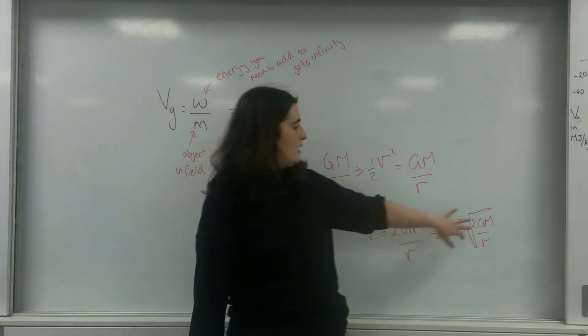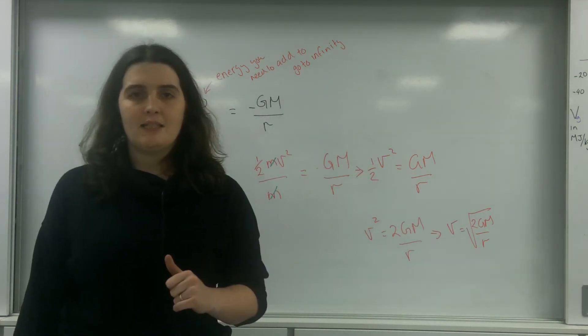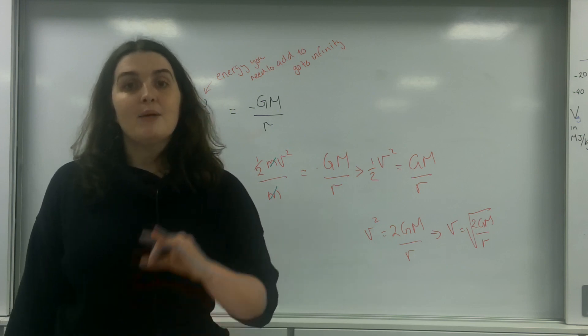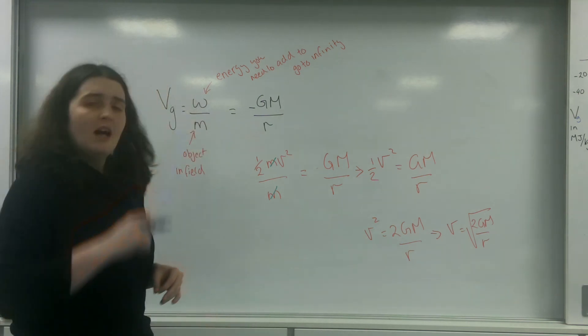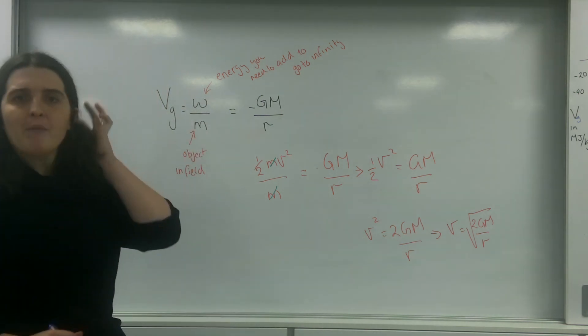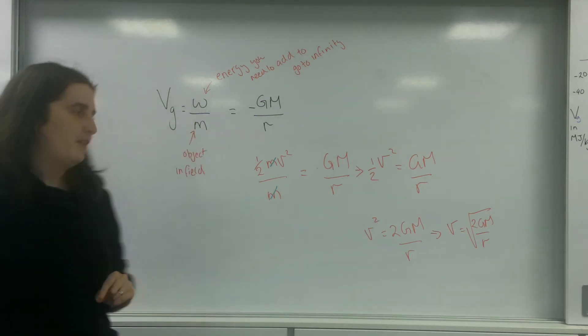So this v equals square root of 2GM over r, this v is the escape velocity, because it's the velocity that would give me enough kinetic energy to leave the field. And we're going to have a go at how much kinetic energy and what's the velocity we need to add at the Earth's surface.